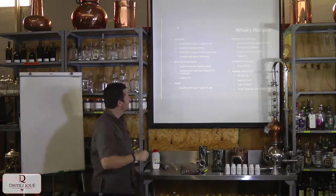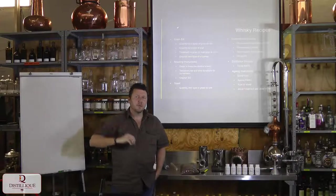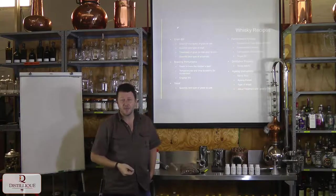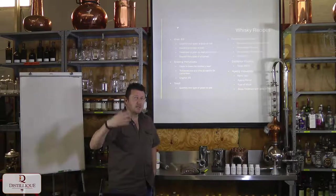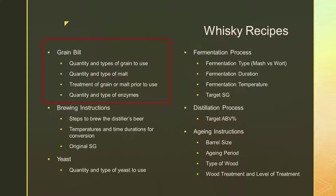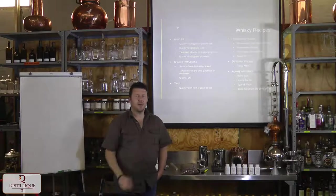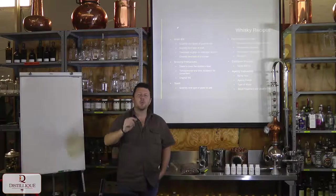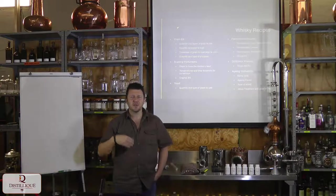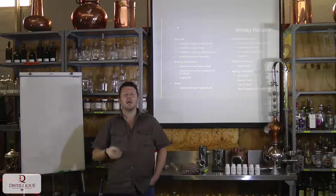Also required: the treatment of the grain or malt prior to use — all the malting, roasting, and kilning processes we can apply to malt can be applied to other grains too. Did you do something with this grain before use? And the quantity and type of other enzymes — if adding concentrated enzymes, the recipe must specify the brand, not just 'add alpha amylase' or 'add glucoamylase.' Different brands have different conversion temperatures, conversion times, and dosages, so you need to specify brand, quantity, and type.